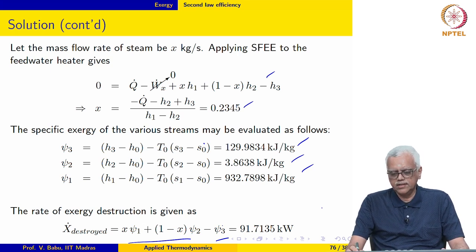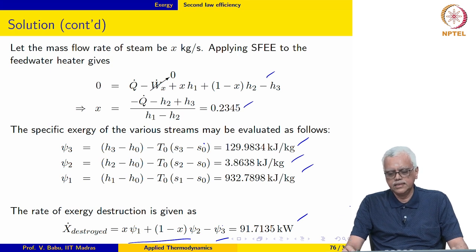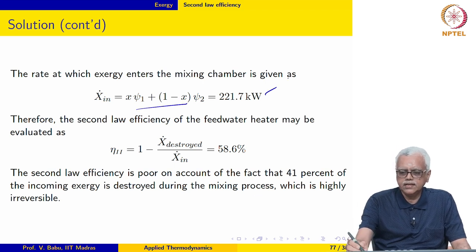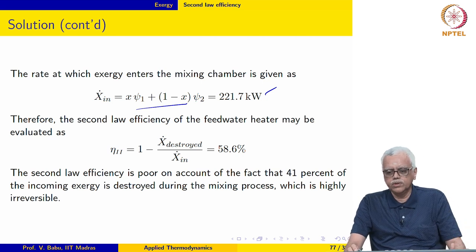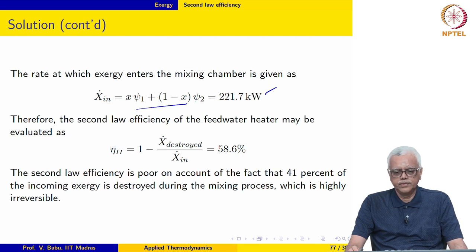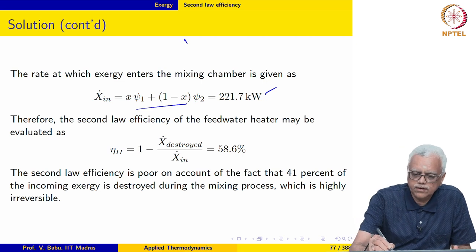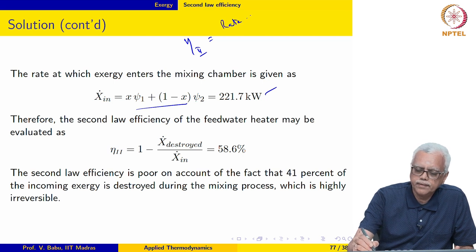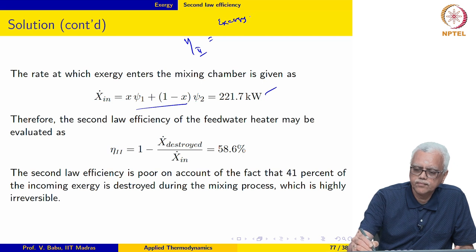The rate at which exergy enters the feed water heater comes out to be 221.7 kilowatts, and the rate of exergy destruction is 91.7135 kilowatts. Since this is not a work producing or work absorbing device, the second law efficiency is written as exergy recovered divided by exergy supplied.